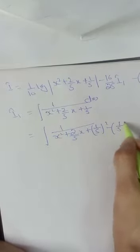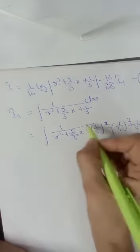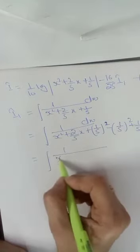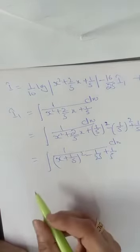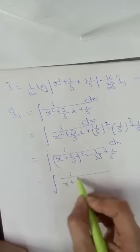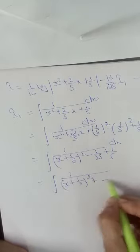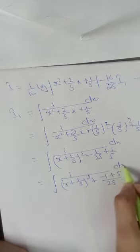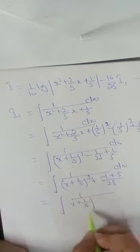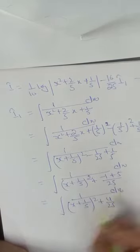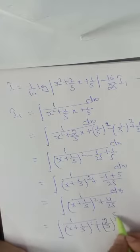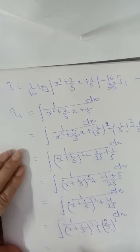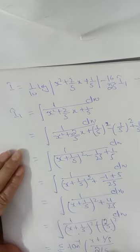For I₁, half the coefficient of x is 1/5. Adding and subtracting the square of 1/5, we get 1 upon (x + 1/5)² minus 1/25 + 1/5 dx. Taking LCM: minus 1 + 5 gives 4/25. So it becomes 1 upon (x + 1/5)² + (2/5)² dx, which is of the form 1/(x² + a²), giving (1/a) tan⁻¹(x/a) + c.